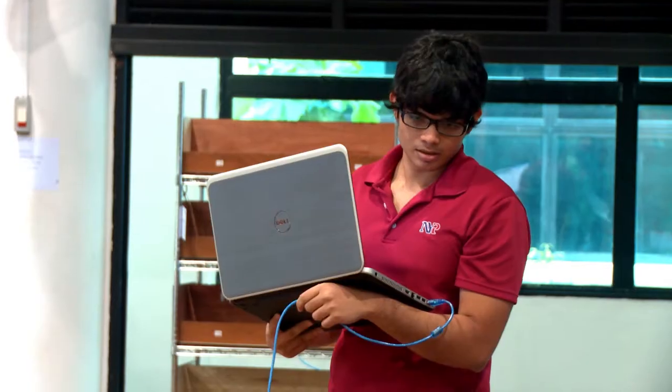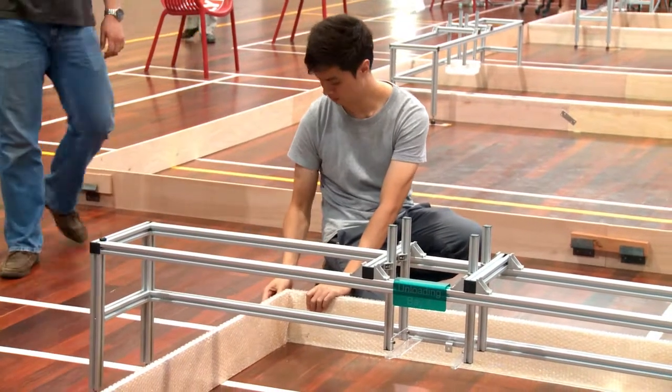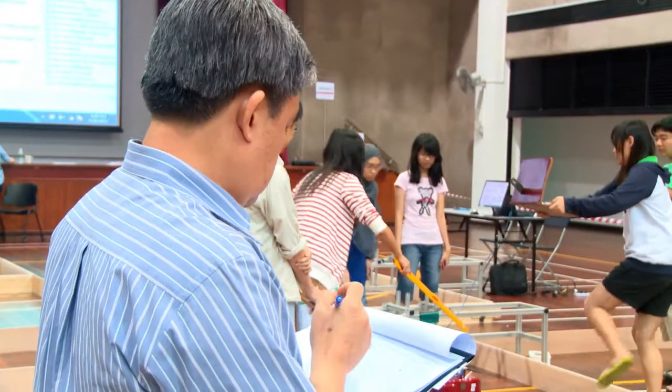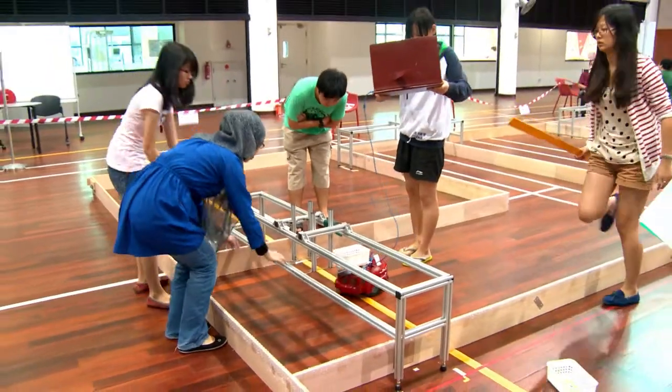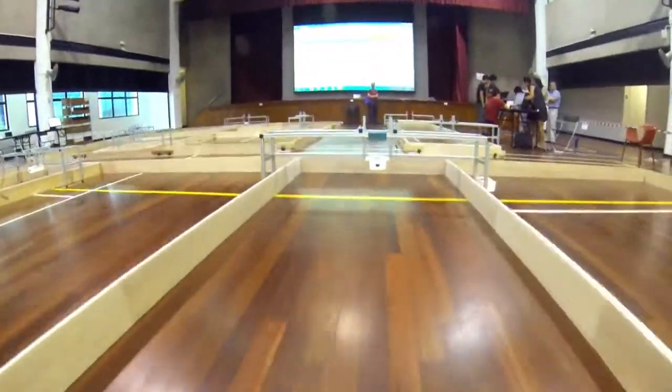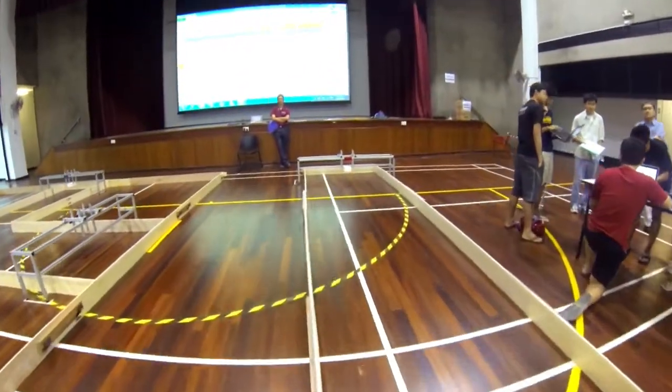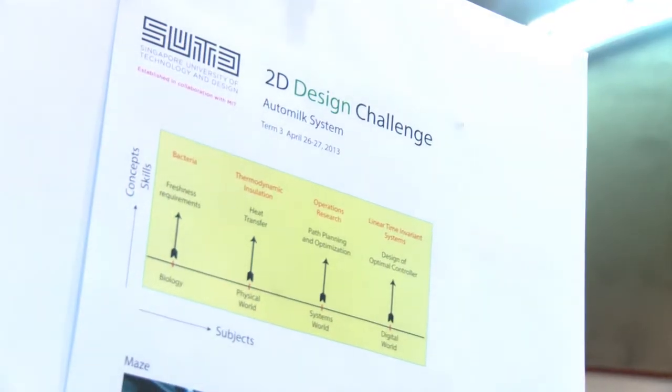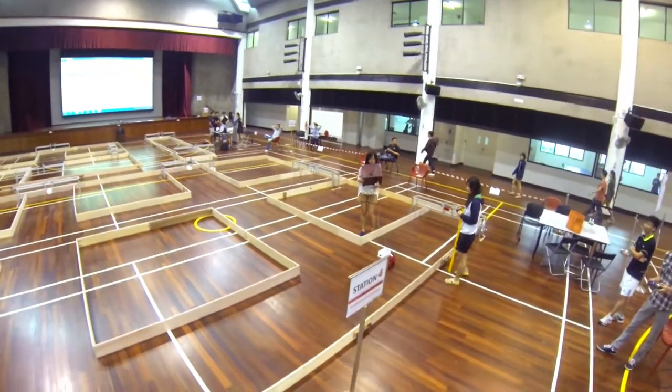The other two classes are biology and physical world. Those two classes correspond to the first phase of this project, which students completed in week 10. That phase required students to understand the meaning of the freshness of milk — what it means about bacteria, how long bacteria can last, and so on. The whole idea is to build a complete system which includes heating the milk, putting it inside an insulator, and then loading the milk cartons onto the robot and delivering them.